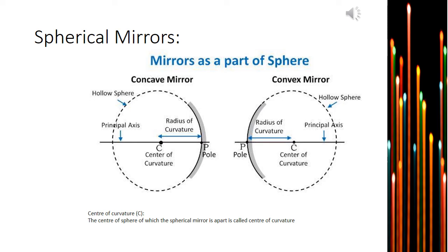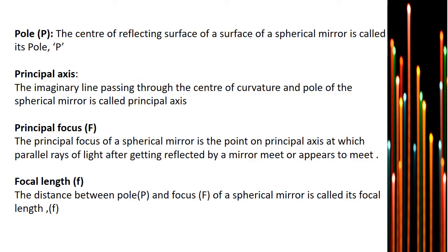The first term is center of curvature, defined as the center of the sphere of which the spherical mirror is a part. The pole, denoted by capital P, is the center of the reflecting surface of a spherical mirror. The principal axis is the imaginary line passing through the center of curvature and the pole. The principal focus, denoted by F, is the point on the principal axis where parallel rays of light meet or appear to meet after reflection. Finally, the focal length is the distance between the pole and the principal focus of the spherical mirror.